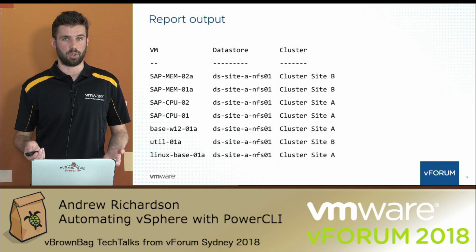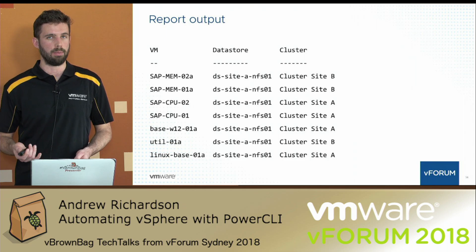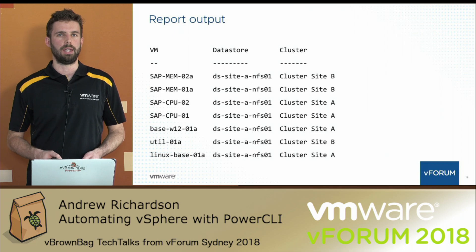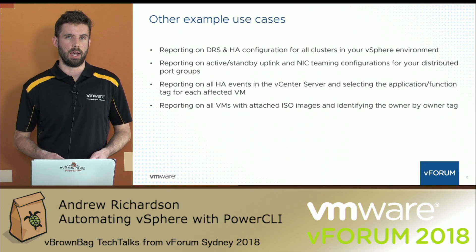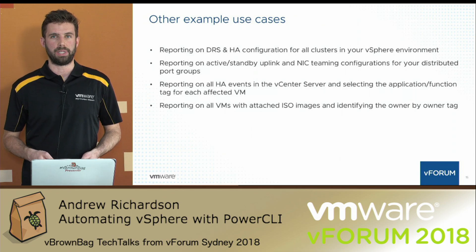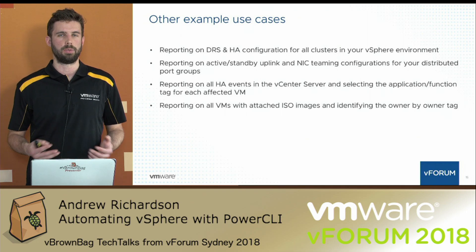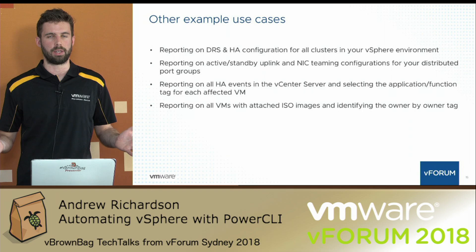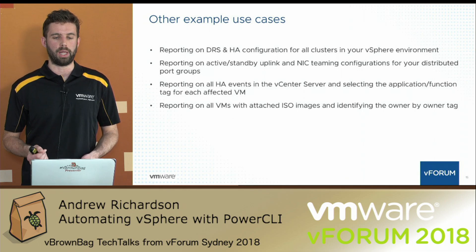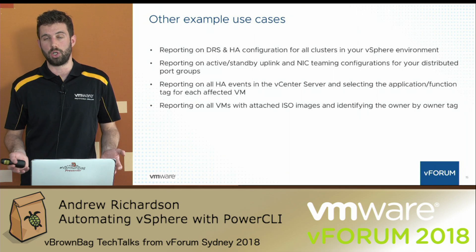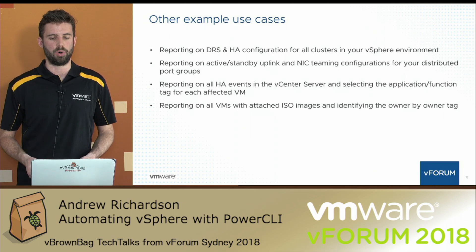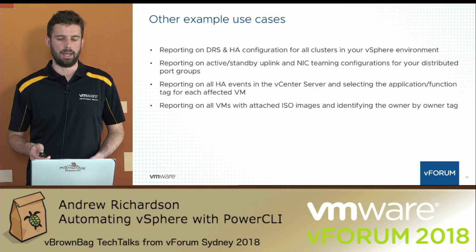Instead of outputting this as a table on screen, you could also output it as a CSV file, email it, or output it as raw text — there are a few different options. Some other example use cases for this technique include reporting on DRS and HA configurations for all clusters in your environment, reporting on active and standby uplink and teaming configurations for your distributed port groups — both useful in a health check situation to ensure configuration hasn't drifted. You can also report on all HA events in vCenter and select the application or function tag for each affected VM, or list all VMs with attached ISOs and identify the owner by the owner tag.